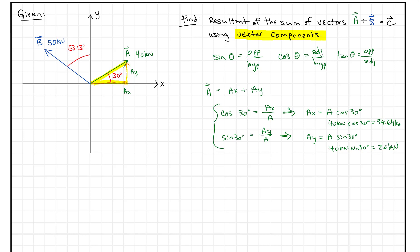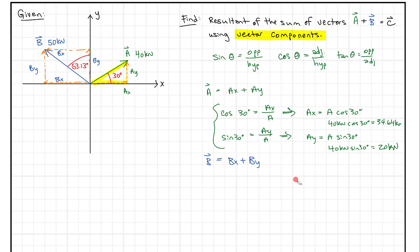Similarly, we look at vector B, which also breaks into BX plus BY. The X direction here is in the negative direction, and the Y component goes up. Drawing these tip to tail, we have BX and BY forming a triangle. But notice the angle is defined differently here — the adjacent component next to the 53.13-degree angle is BY, not BX. That all depends on where the angle is measured from.